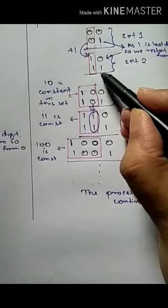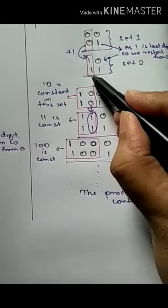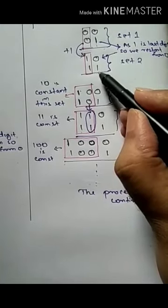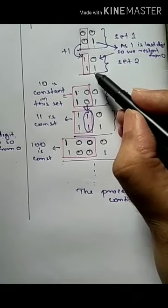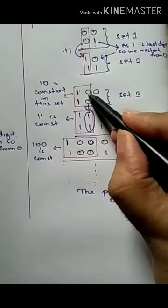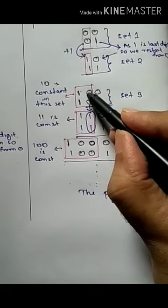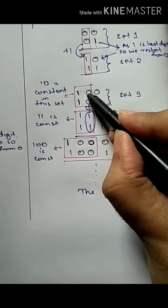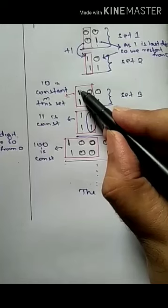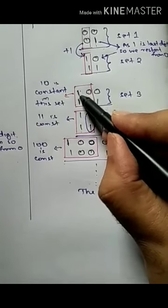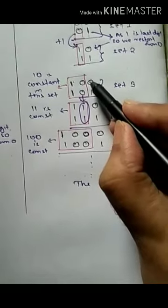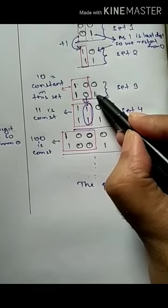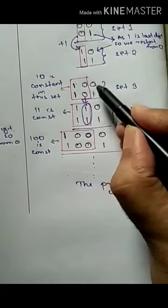When both the units place and tens place have reached 1 — the last digit of binary — both places restart from 0. One is added to the left position of the tens place, creating a hundreds place with 1, making it 100. Since the units place is now 0, it can increment to 1 — the next digit in binary after 0.